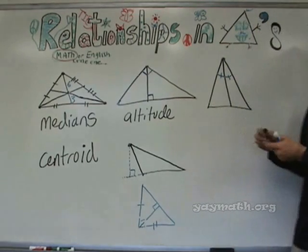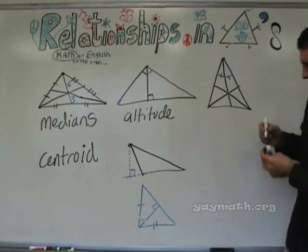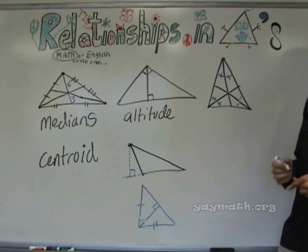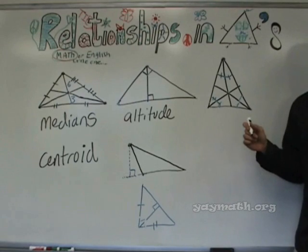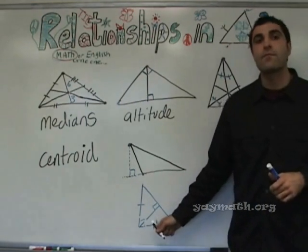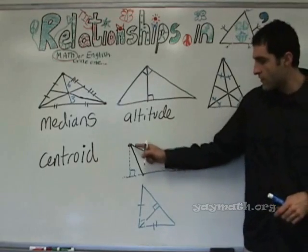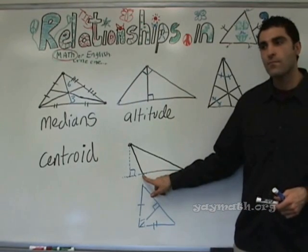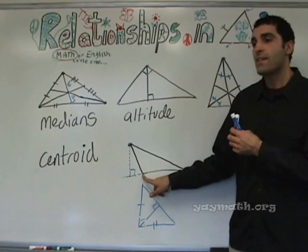So those are the altitudes. Three angle bisectors — those are pretty straightforward. This angle is cut in half — angle bisector, angle bisector, angle bisector. Any more questions before we do the last one? For a right triangle, the two sides of the triangle can also be altitudes. What would be the altitude from this vertex? What does an altitude do? It goes from the vertex to the opposite side at 90 degrees.